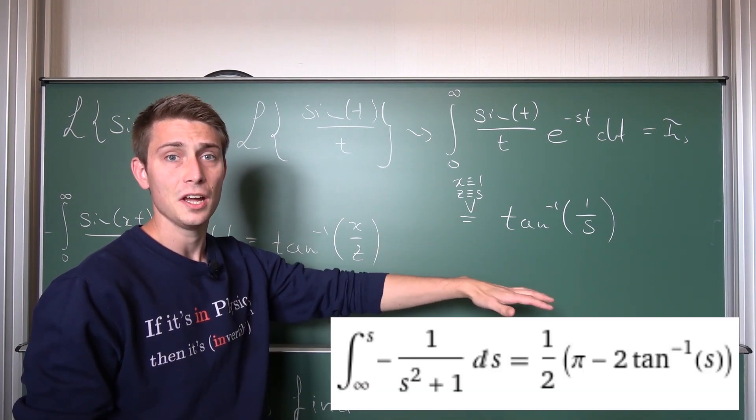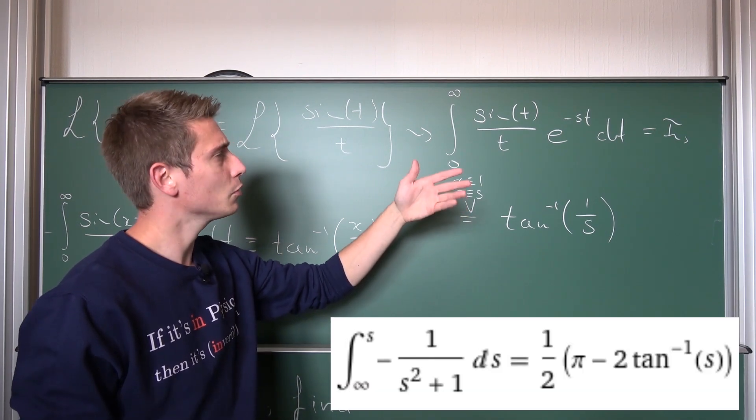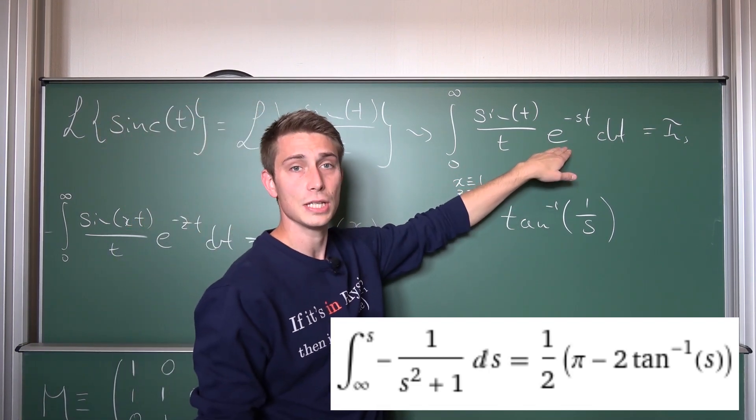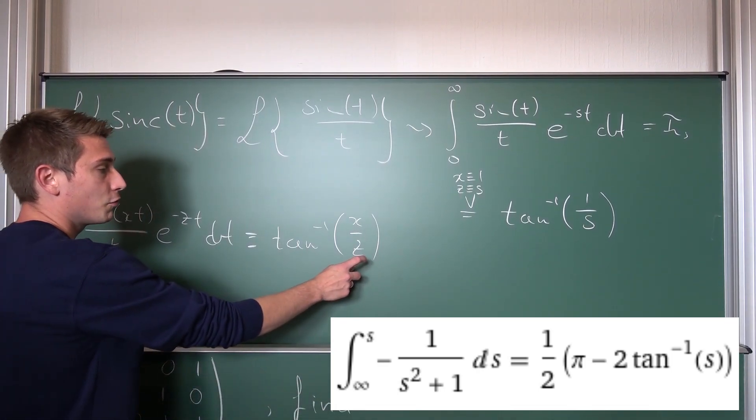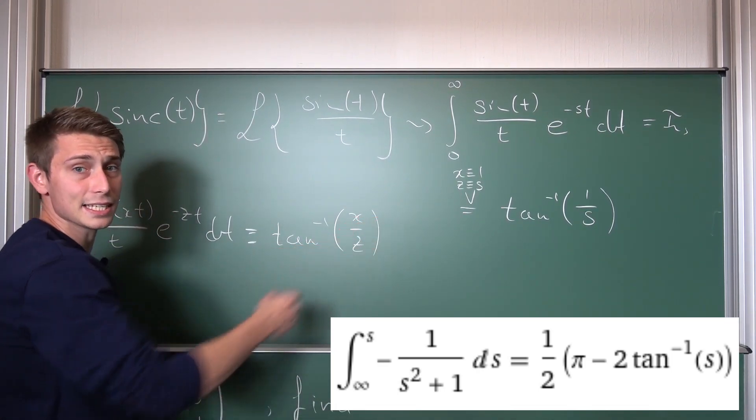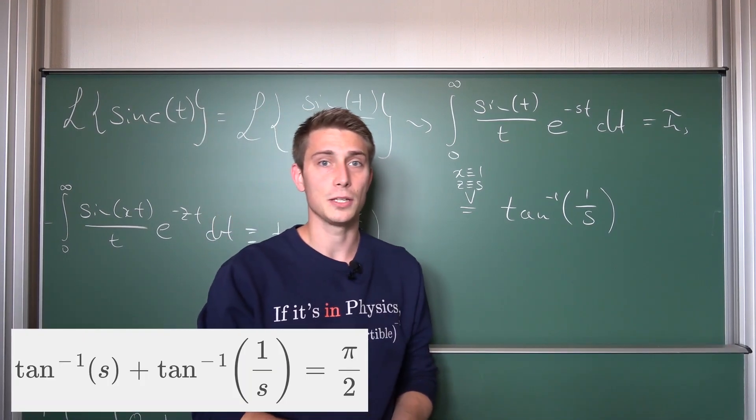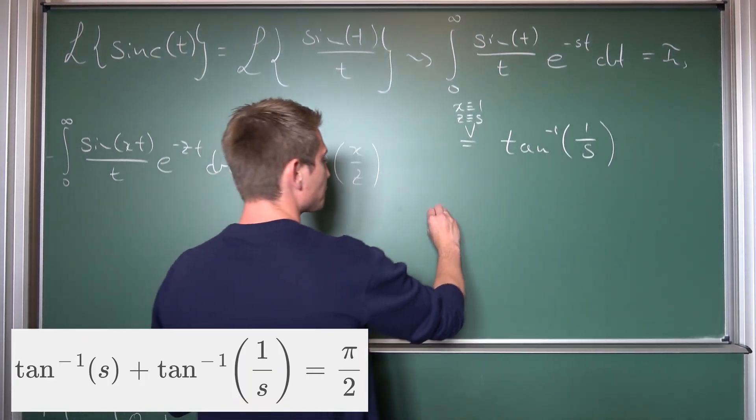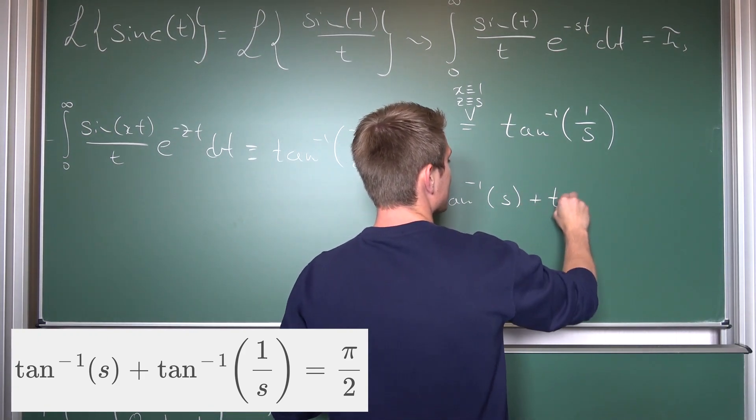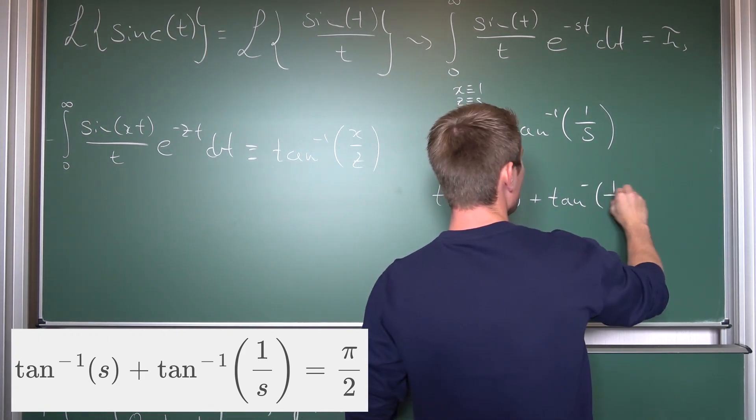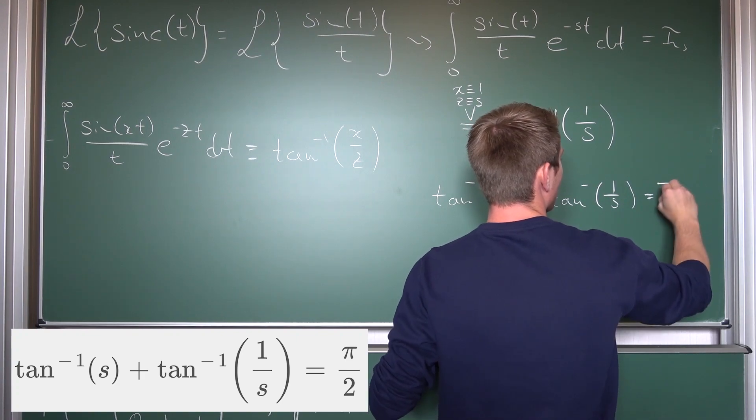You are going to get an expression, you are going to integrate it, then you are going to get, if it's the e to the negative st factor, a pi over two minus the inverse tangent of just simply z or s in our case. And then you are going to make use of the formula that the inverse tangent of s plus the inverse tangent of one over s is nothing but pi over two.